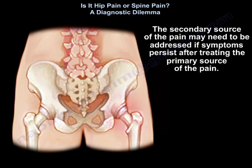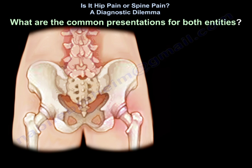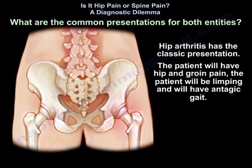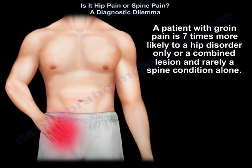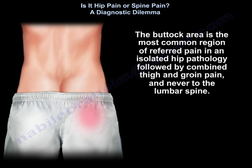Hip arthritis has a classic presentation: the patient will have hip and groin pain, will be limping, and will have an antalgic gait. A patient with groin pain is seven times more likely to have a hip disorder alone or a combined lesion, and rarely a spine condition alone. The buttock area is the most common region of referred pain in isolated hip pathology, followed by combined thigh and groin pain — and never referred to the lumbar spine.